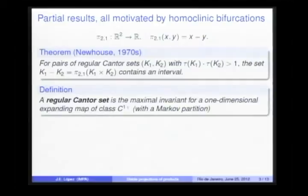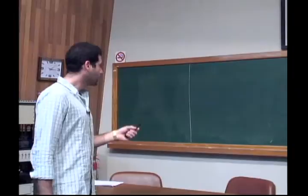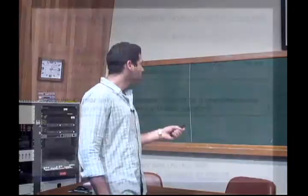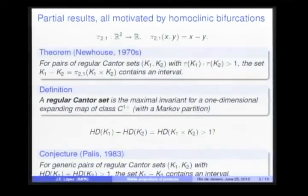And what about this necessary condition? A regular Cantor set can have thickness near to zero and at the same time, Hausdorff dimension near to one. Then, trying to solve this gap, Palis conjectured in 1983 that for generic pairs of regular Cantor sets with sum of Hausdorff dimensions bigger than one, their arithmetic difference contains an interval.